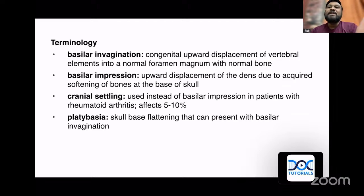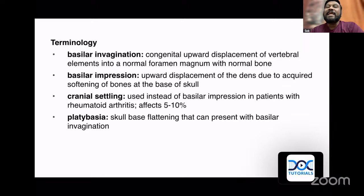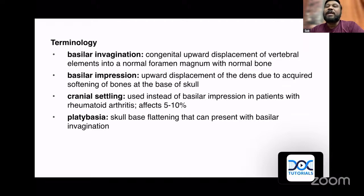The same thing, if it happens due to acquired bone softening — like rickets, osteomalacia, vitamin D deficiency, or renal failure — that is called basilar impression. So when it is congenital it is invagination; if it is acquired, it becomes basilar impression. Cranial settling is a specific term for the same pathology when it occurs in rheumatoid arthritis, where structures settle above the tip of the odontoid. Platybasia, as already explained, is skull base flattening where the clivus angle becomes more obtuse.